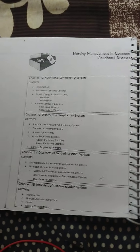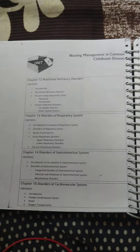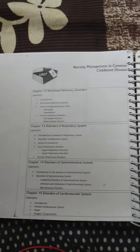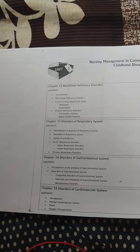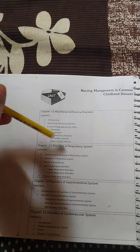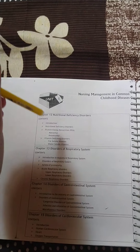Hello friends, today I am going to start a new unit: Nursing Management in Common Childhood Disease. This is Unit Number 5 in Child Health Nursing, and under this unit there are 13 subtopics. The first topic is Nutritional Deficiency Disorder, in which we are going to discuss introduction, protein energy malnutrition, marasmus, and kwashiorkor.